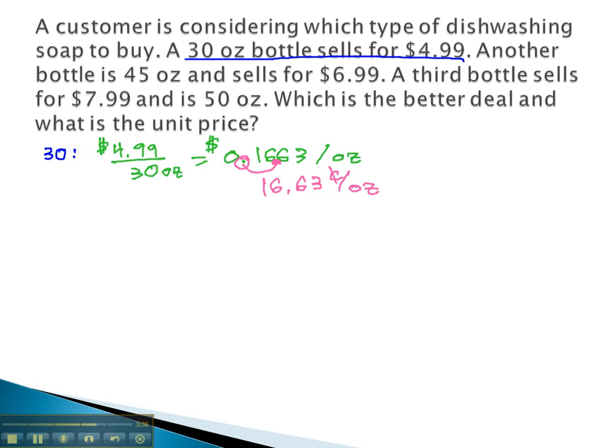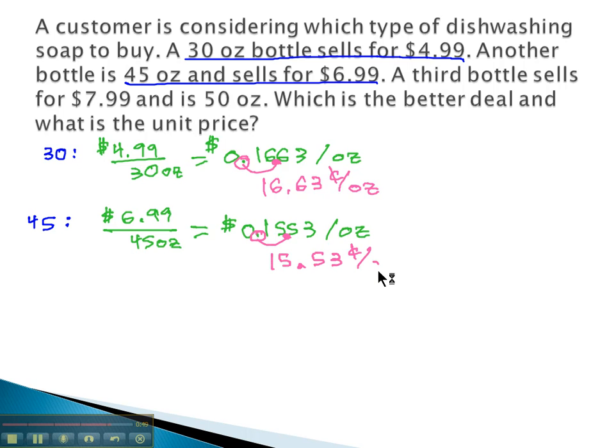We compare it to another bottle. We've got a 45 ounce bottle that sells for $6.99. Price per size: 6.99 divided by the 45 ounces will give us a unit price of 0.15553 dollars per ounce, or converting to cents, 15.53 cents per ounce.